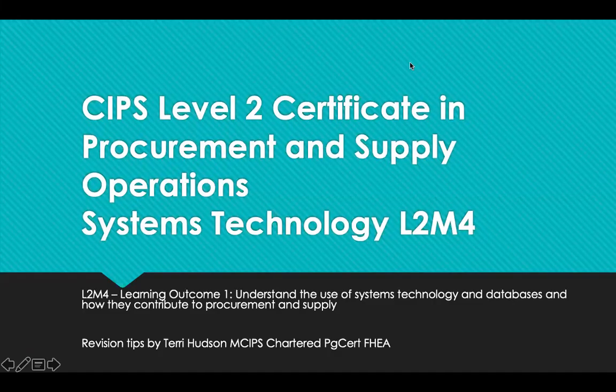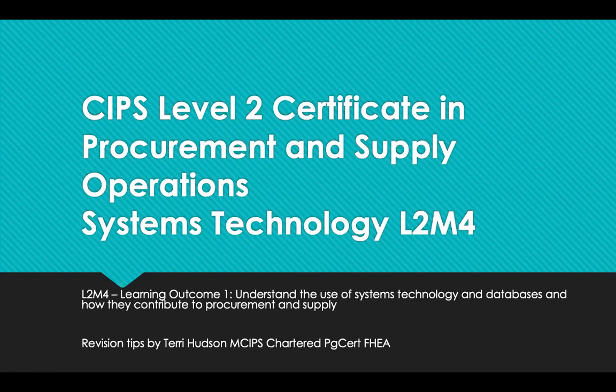Hello and welcome to revision tips for CIPS Level 2, Certificate in Procurement and Supply Operations, Module 4, which is Systems Technology. These revision tips cover learning outcome 1, which is to understand the use of system technology, databases and how they contribute to procurement and supply.